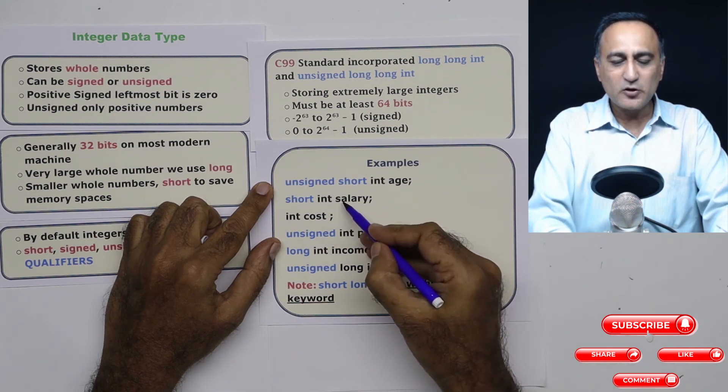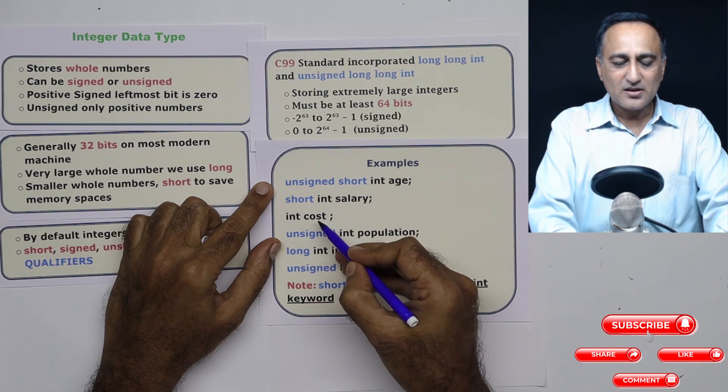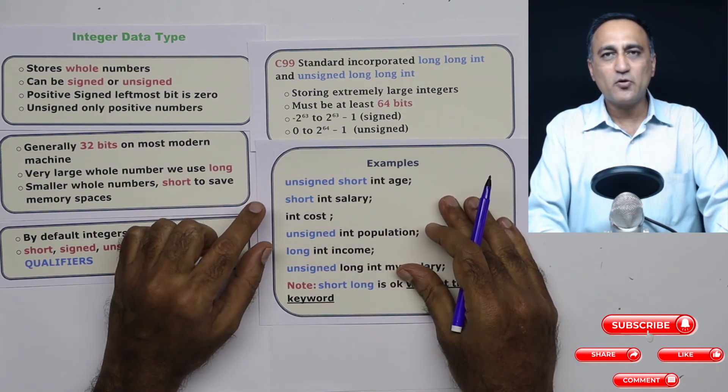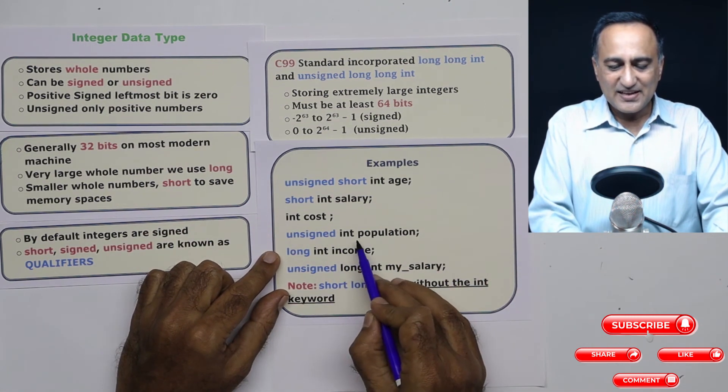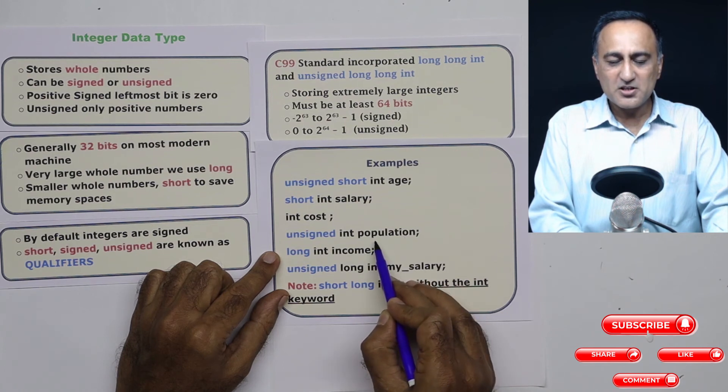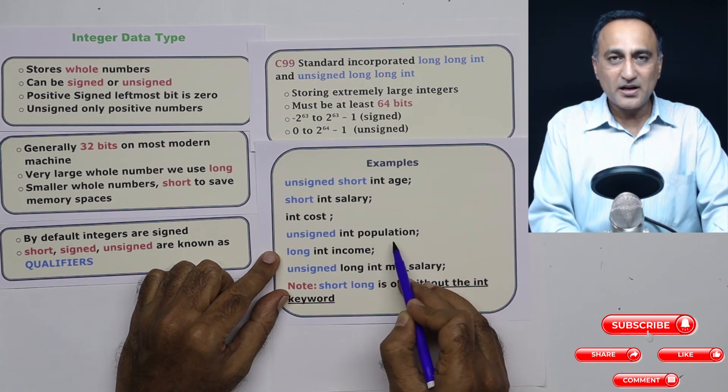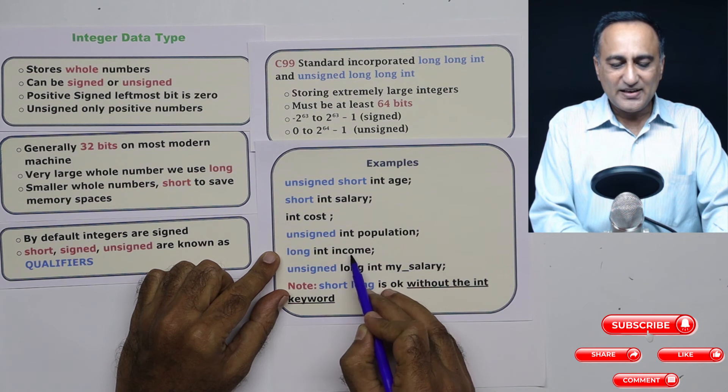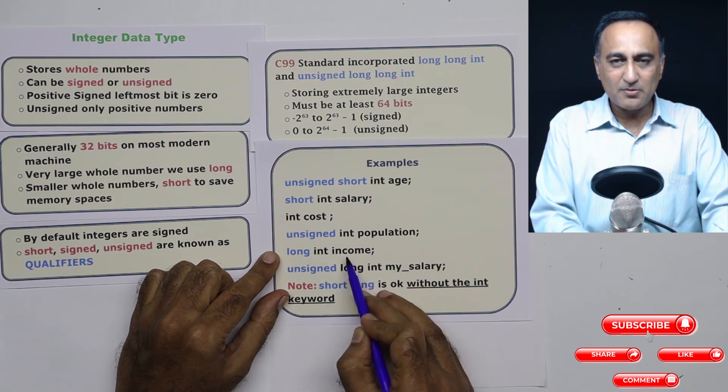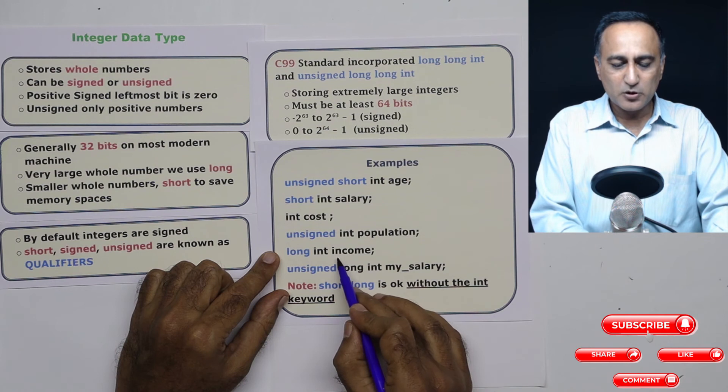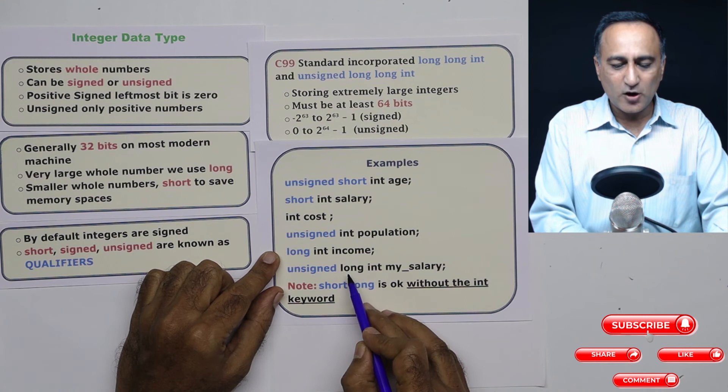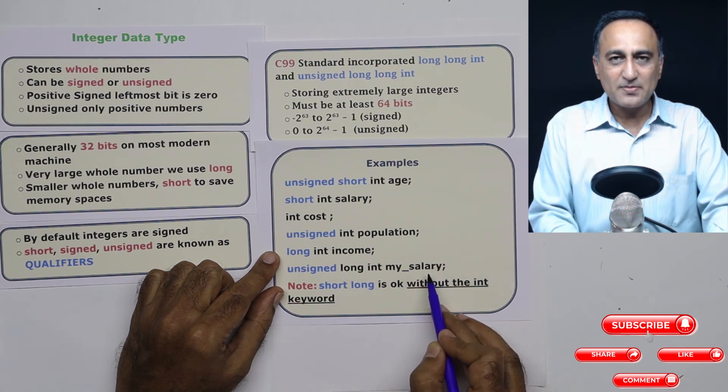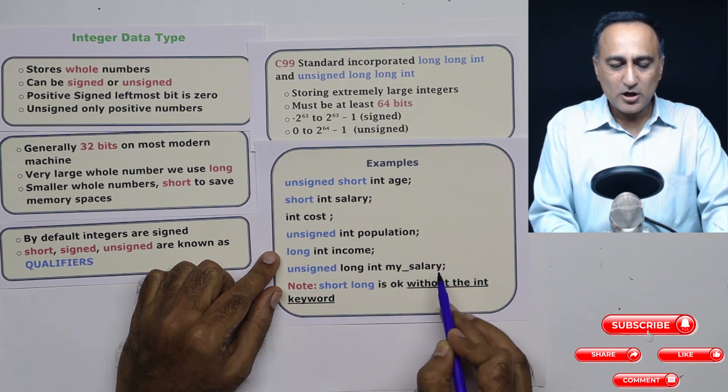Suppose int is 32 bits or 4 bytes. This one int is 32 bits or 4 bytes. More than likely short is going to end up being about 16 bits or 2 bytes. This is unsigned int population, that means population can be 0 or positive, cannot be negative. Long int income, that means this is an integer type of variable having a large capacity; both positive and negative numbers can be stored. This is again a long but it's an unsigned long and variable is my_salary. It can only be 0 or positive.